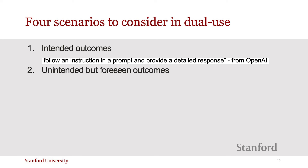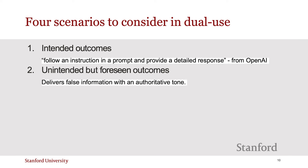The second scenario is unintended but unforeseen outcomes. These are behaviors or actions that your technology exhibits that were not designed for intentionally, but that the designers did conceive of. For example, OpenAI knew that there could be false information disseminated through ChatGPT, since it is only a large language model, not any definitive source of information.